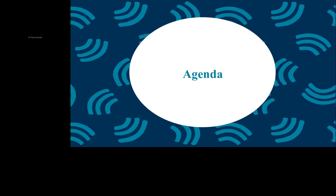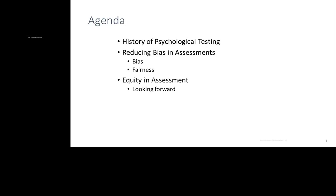My name is Peter Entwistle, and I'm speaking to you today from Maryland, just outside of Washington DC. Our agenda is as follows: I'm going to talk about the history of psychological testing, which will only take a few minutes. Then we'll move into reducing bias in assessment, looking at bias, equity and fairness, and then looking forward. I'll begin with an examination of how early tests were developed and used, the purposes of those tests, and the rising awareness of methods that can be used to address bias and equity.